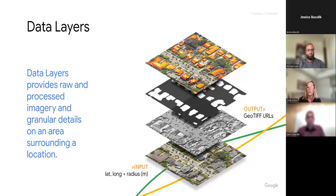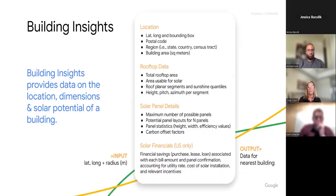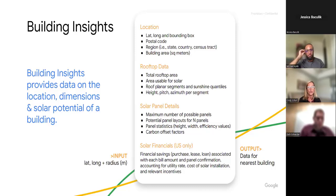The solar API is part of the Google Maps Platform environment platform. There are two different endpoints. The first is our data layers endpoint, which returns raw solar information for an area surrounding a location — including flux, DSM, building mask, and RGB imagery. The second is our building insights endpoint, which aggregates raw data and makes calculations to arrive at usable insights around location, dimensions, and solar potential of the building. Specifically in the US, it also provides financial data around utility rates and financial incentives.